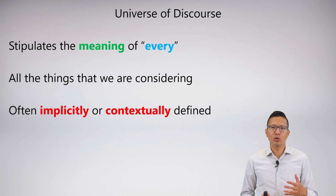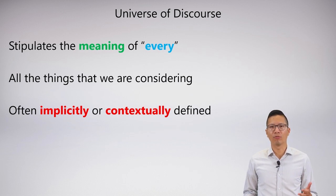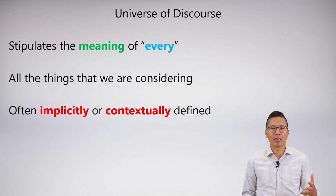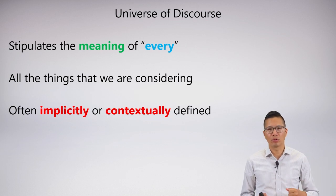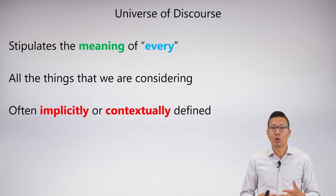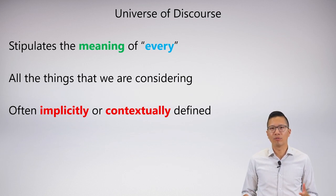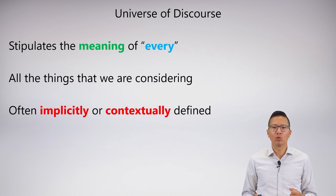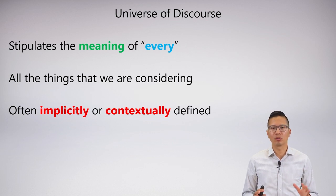The universe of discourse is often implicitly or contextually defined. So if I'm in a restaurant and I say 'everything tastes so good,' I don't really mean that rock sitting outside the window — I mean what's on our plate or on the table. These sort of implicit and contextually defined things don't go over so well in a logic class, so we're going to have to talk about what we mean by the universe of discourse more carefully.